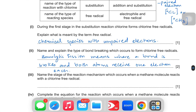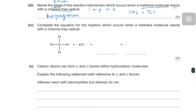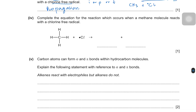Name the stage of the reaction mechanism which occurs when a methane molecule reacts with a chlorine free radical. Since a molecule (CH₄) is reacting with a radical (Cl•), the stage is propagation, because one radical is attacking another molecule.